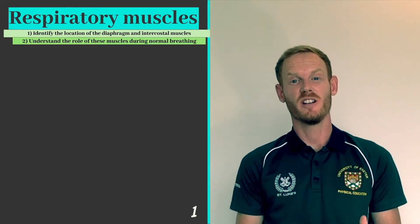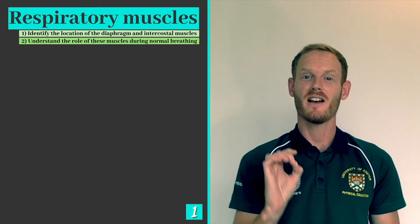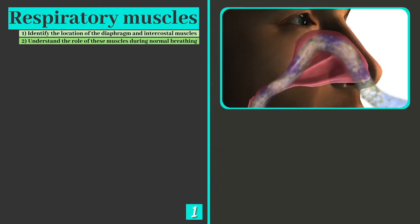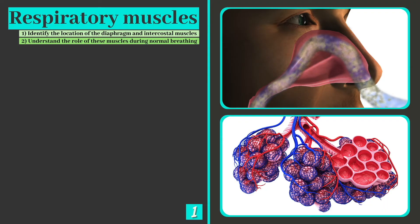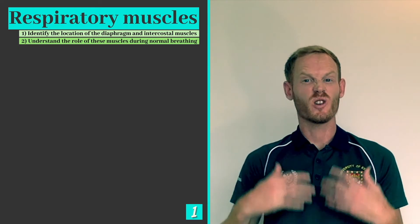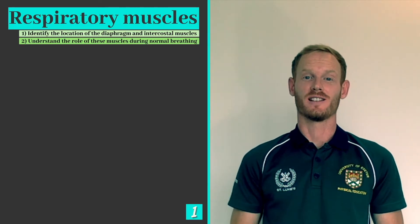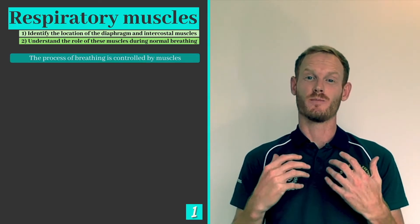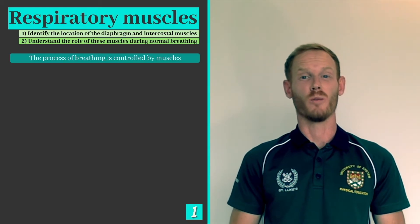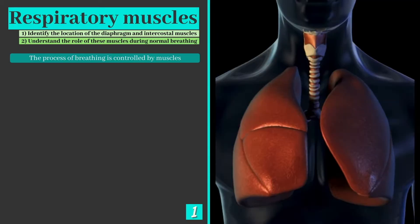In the last video we learned that air follows a pathway when we breathe, from the mouth and nose to the alveoli where gaseous exchange takes place. But how does the air get there and what does the process look like? The process of breathing, otherwise known as pulmonary ventilation, is controlled by muscles.